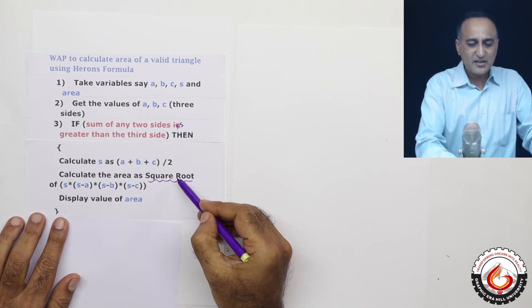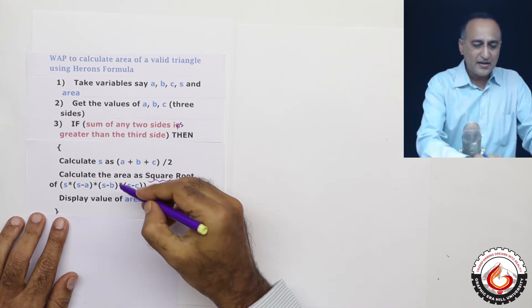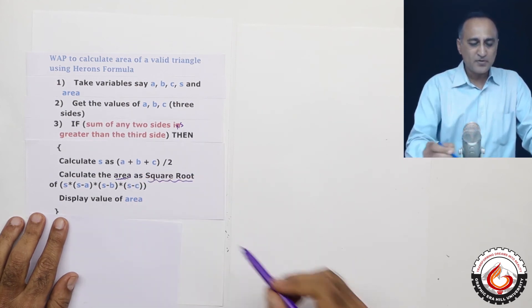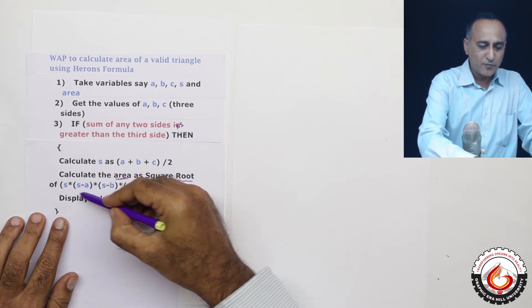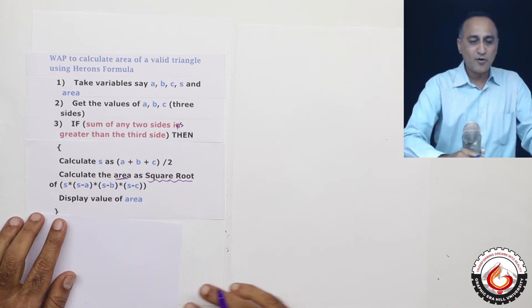Now this will get evaluated and it will result in one single number. This single number when it is sent to this square root function is going to calculate the square root and copy it onto the area variable. So it is going to calculate the square root of whatever this number is, copy it to area and I am going to display the value of area.